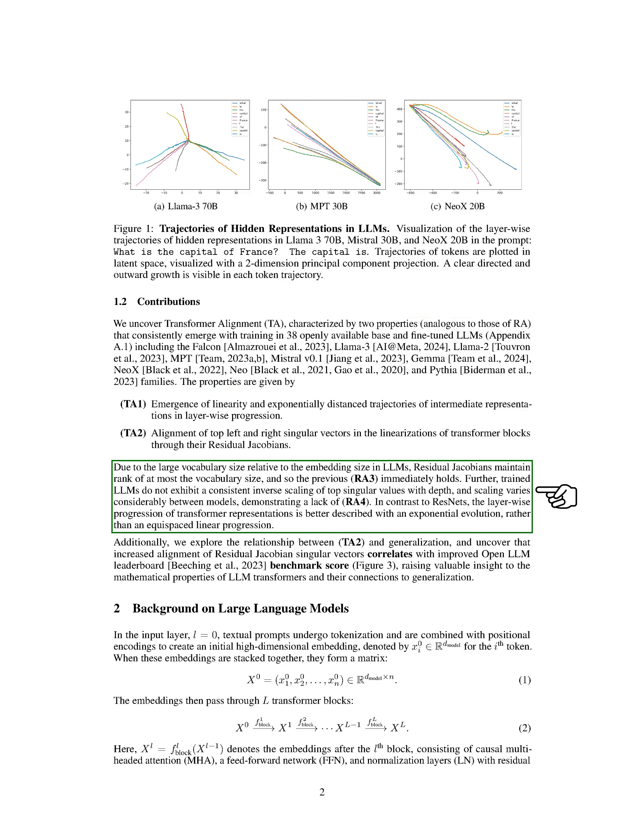The properties of TA show that residual Jacobians maintain a rank at most equal to the vocabulary size, and there is no consistent scaling pattern of top singular values with depth in trained LLMs. Unlike ResNets, transformer representations evolve exponentially across layers rather than linearly. We also explore how increased alignment of residual Jacobian singular vectors links to better performance on open LLM leaderboard benchmarks, shedding light on the mathematical aspects of LLM transformers and their impact on generalization.